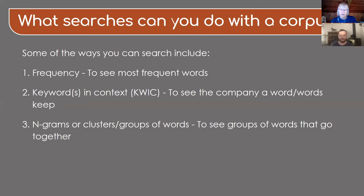So we could ask the program to tell us what three-word groups co-occur, or what four-word groups co-occur, and this can also be informative. So if we do this with a written corpus, we're going to see some examples like 'in the case of' or 'the nature of the.' So those words tend to cluster together, and that's what we would see with an n-gram search, or a word cluster.